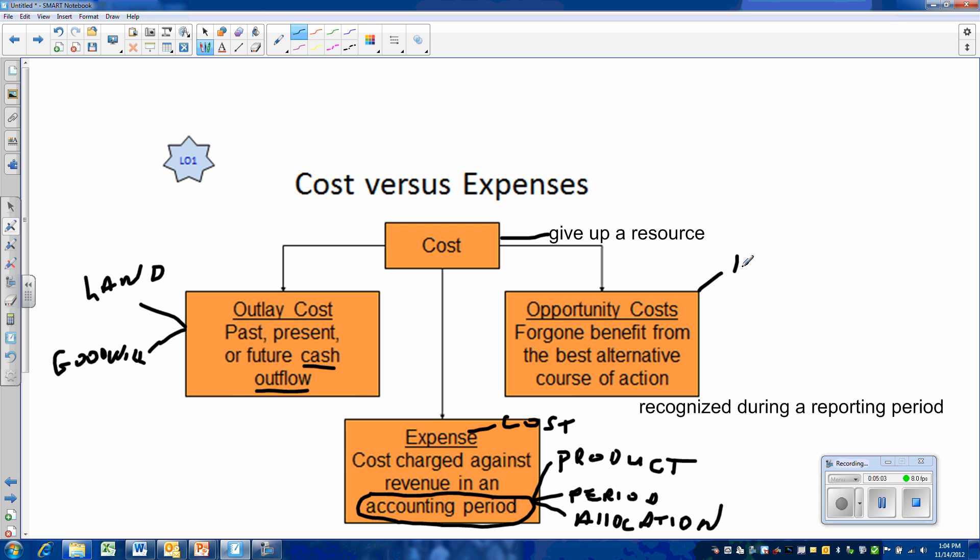Our other category is opportunity costs. Opportunity costs never become an expense. An opportunity cost occurs when you give up, sacrifice a future benefit because you chose a particular alternative course of action.